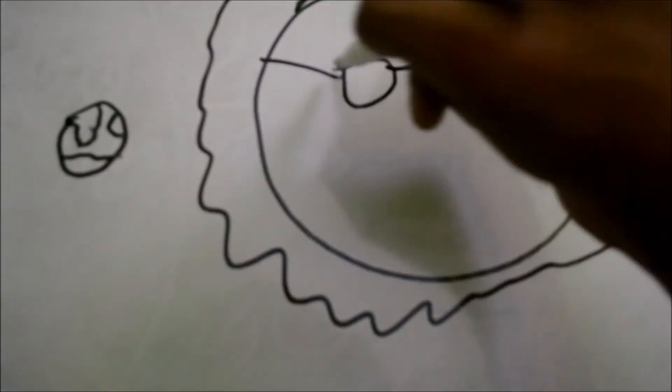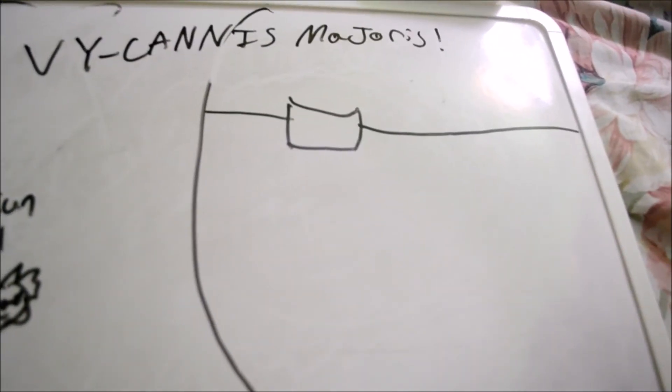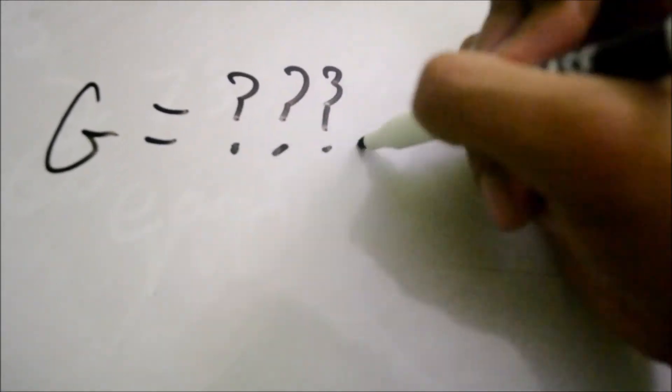Fun fact number two, the sun is really, really big compared to us. Like, so big it would take 1.3 million Earths to fill it completely. But, it's really small in the grand scheme of things, especially compared to other massive stars. The biggest star we found so far is Vy Canis Majoris, a star that's 4.6 billion miles across. That's around 2,000 of our suns. That's approximately 2,730,000,000 Earths inside of it. That's a lot of Earths. Now, imagine the gravity on that sucker. And let's not even get into neutron stars.